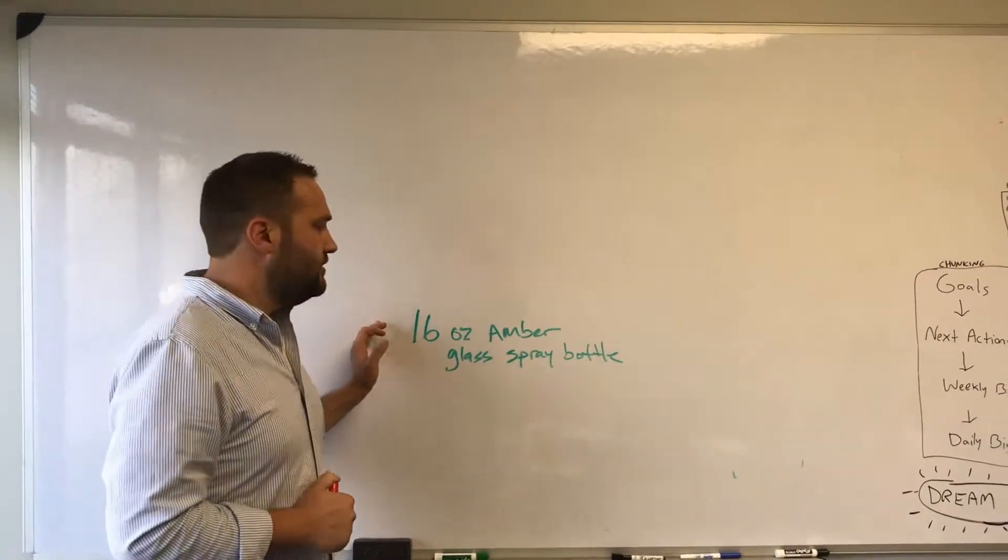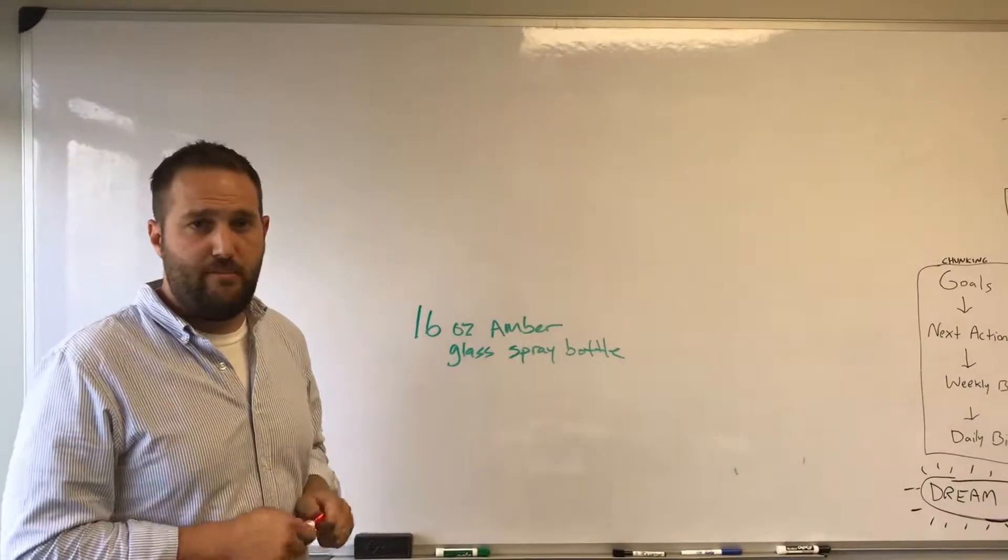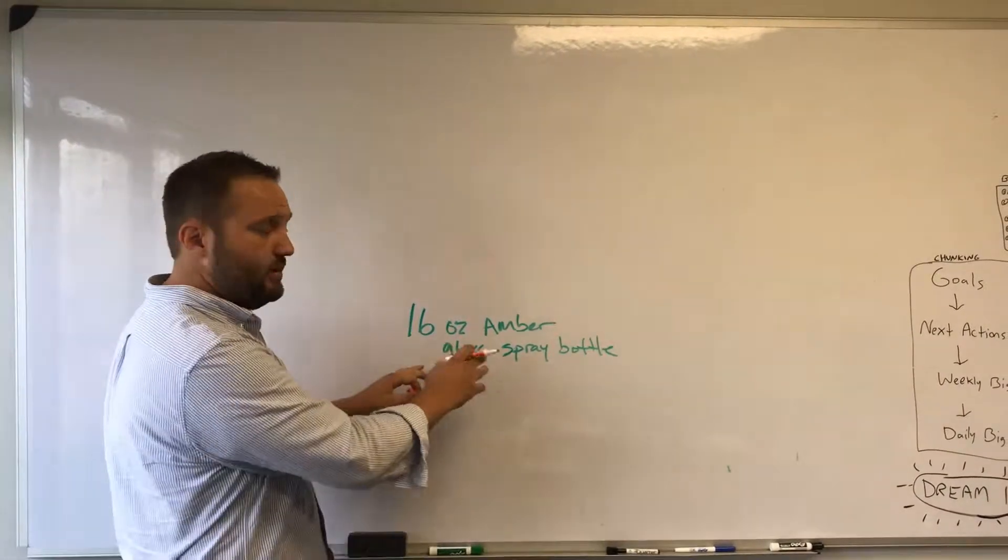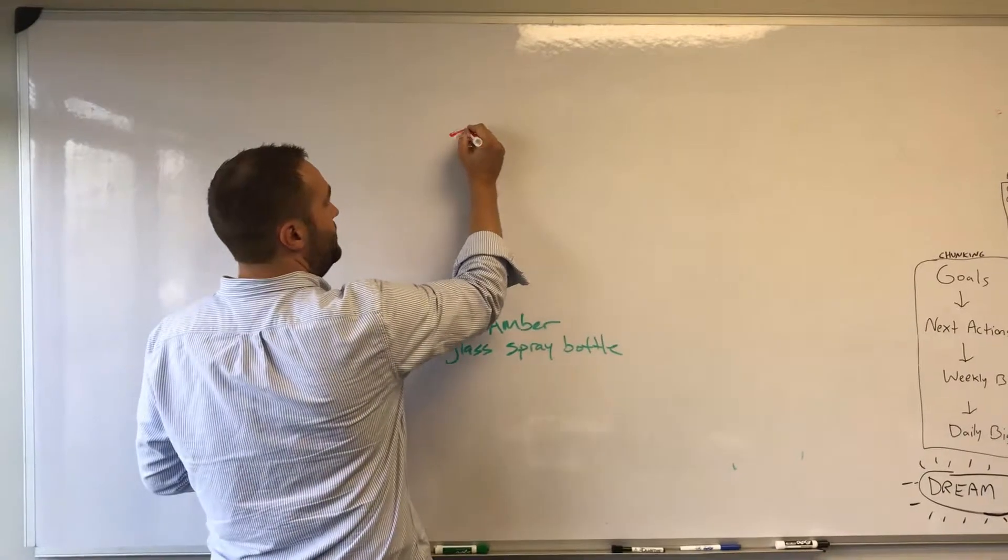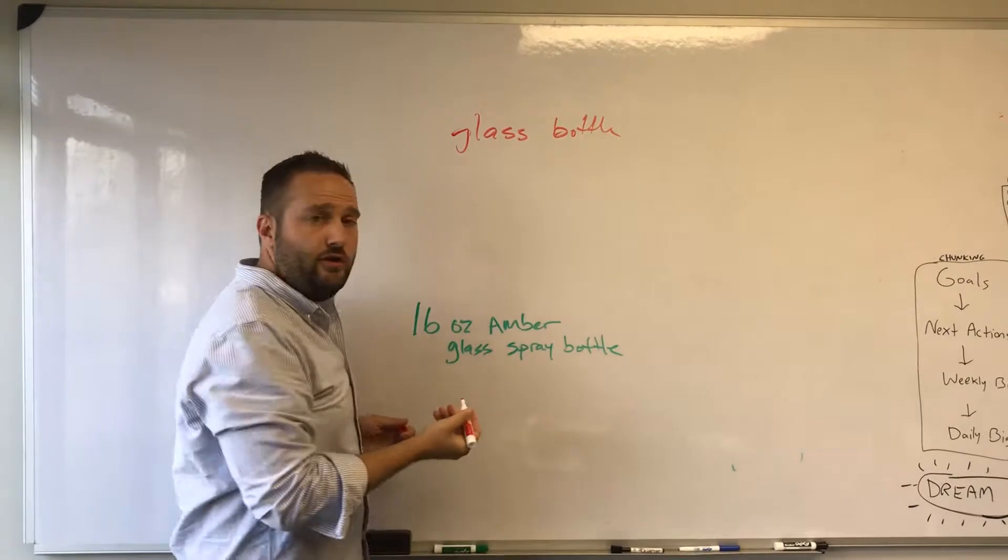Let's say you sell a 16-ounce amber glass spray bottle. The way that Google Shopping works, it's going to pull your product title. They may show your ad for glass bottle, they may also show your ad for glass spray bottle.